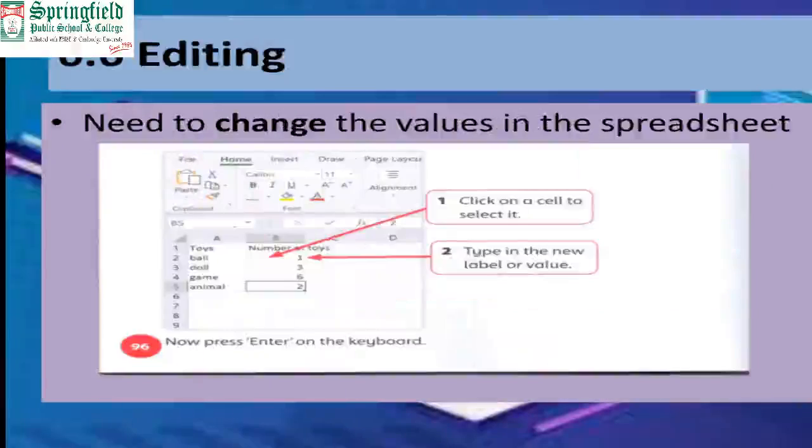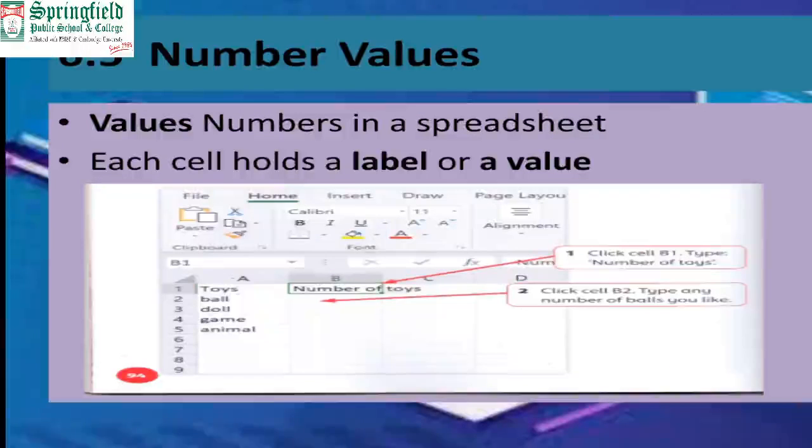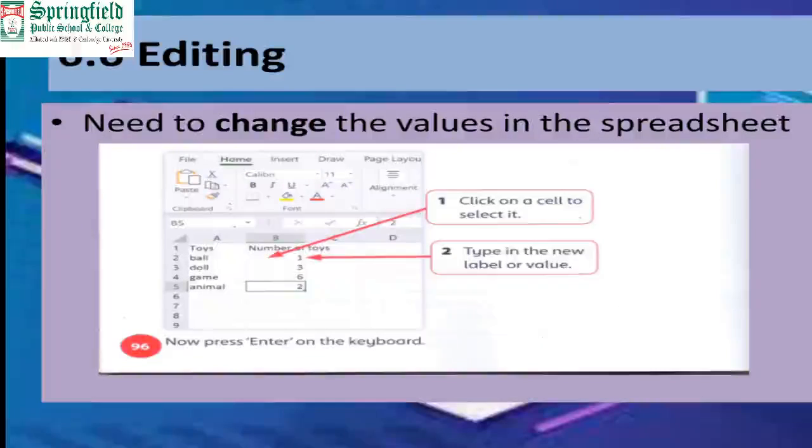Then start typing the numbers - like one ball, two dolls, three games - in this way. What we are doing is adding the numbers and labels in the already existing table.